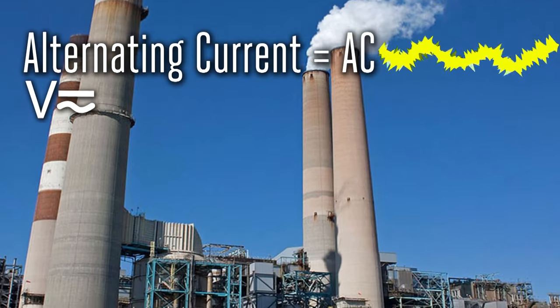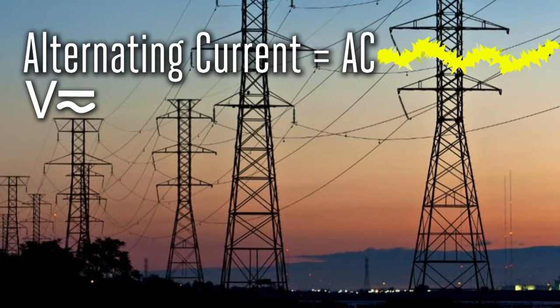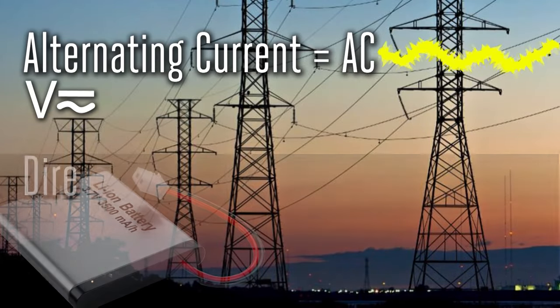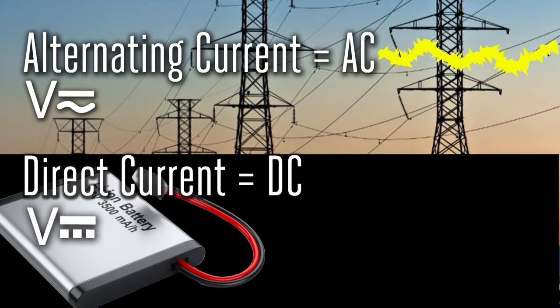Alternating current, or AC voltage, alternates between the positive and negative 60 times a second. That alternating makes the current rough and noisy. Direct current, or DC voltage, does not alternate at all and is smooth and quiet.